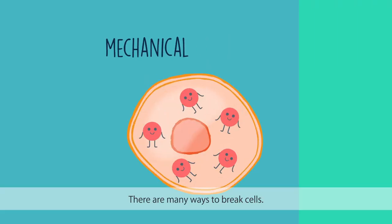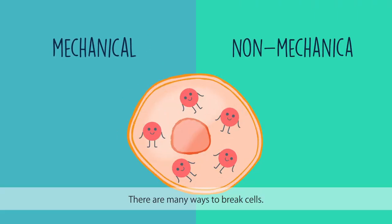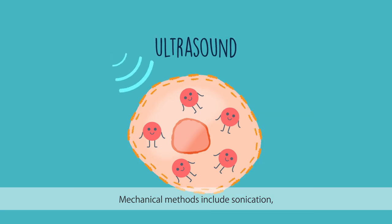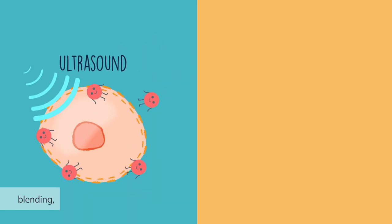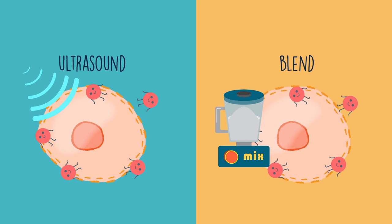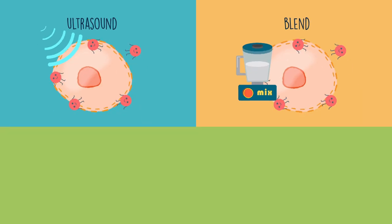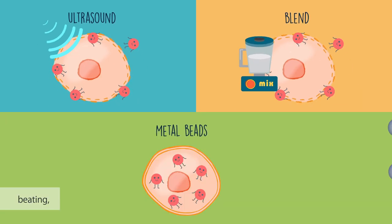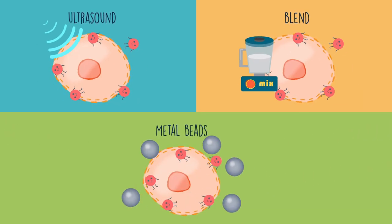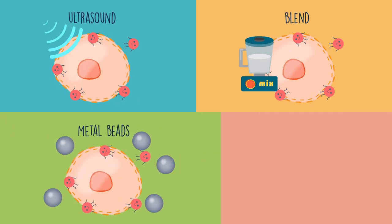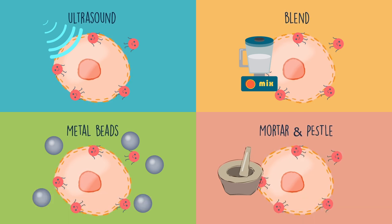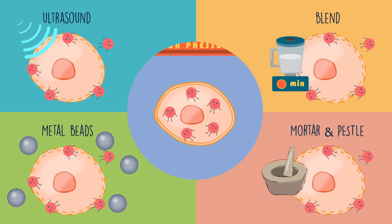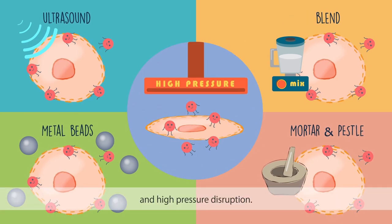There are many ways to break cells. Mechanical methods include sonication, blending, beading, grinding with mortar and pestle, and high pressure disruption.